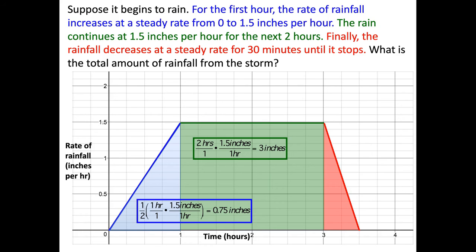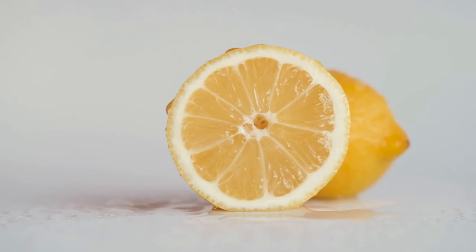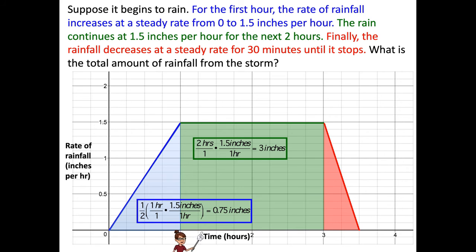Let's look at the green part. Well, that's a rectangle. Easy peasy, lemon squeezy. So that's two hours because it goes from 1 to 3, and its height was constant, 1.5. If you multiply those, you get 3 inches. So now we have 0.75 inches plus 3 inches.